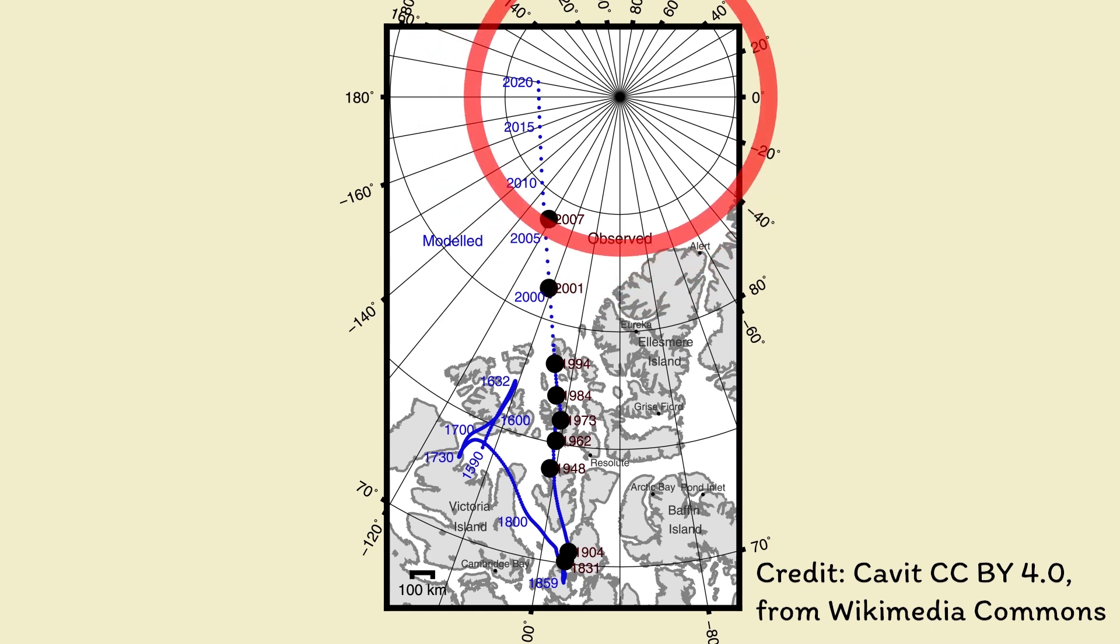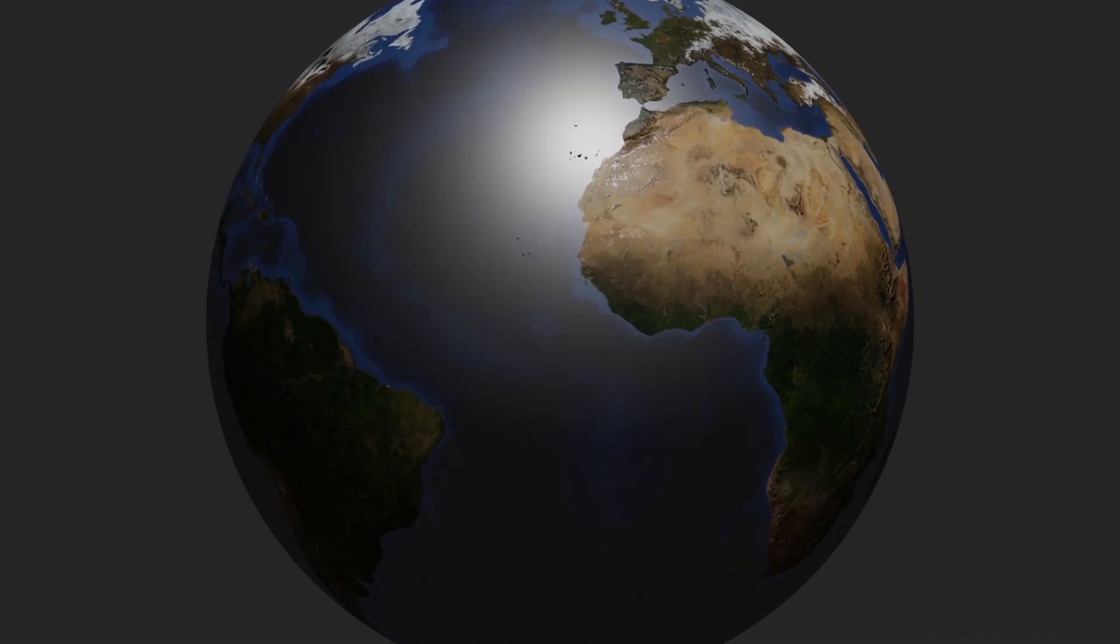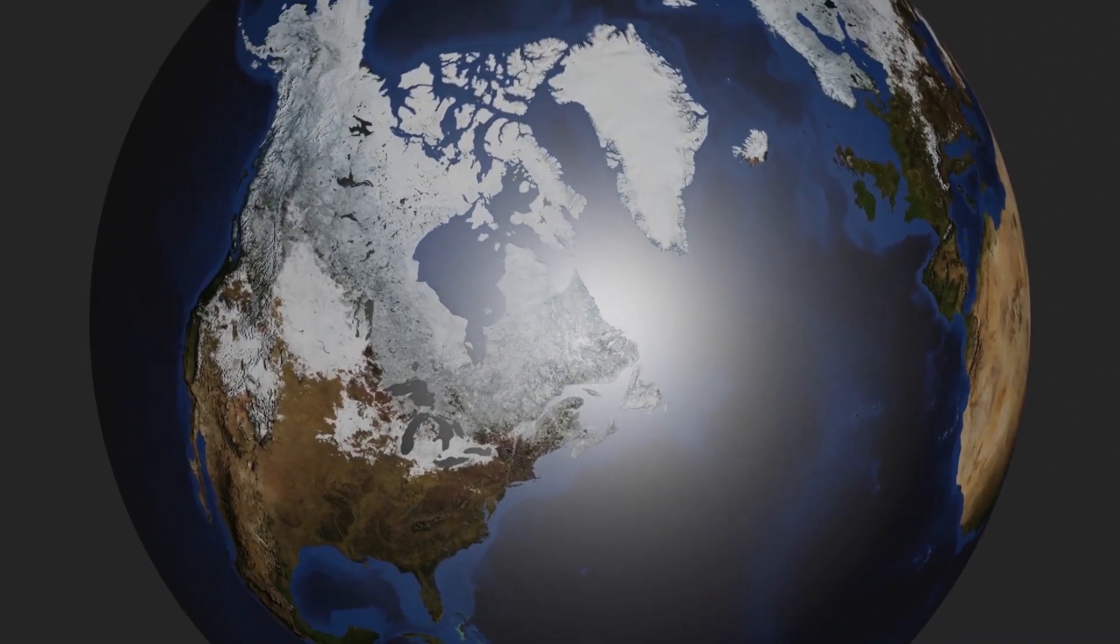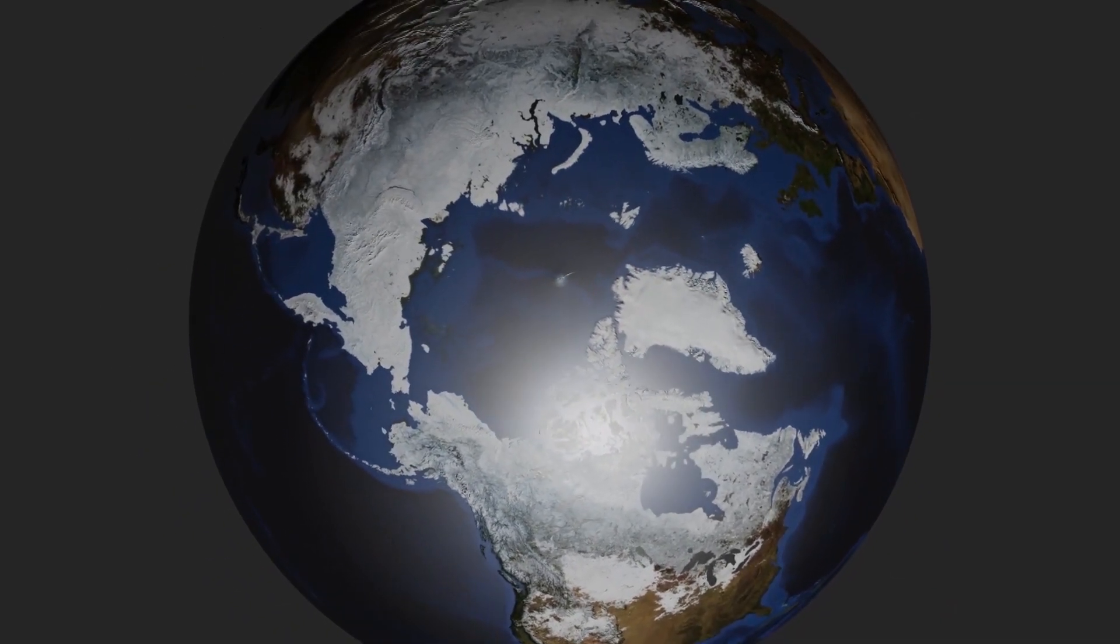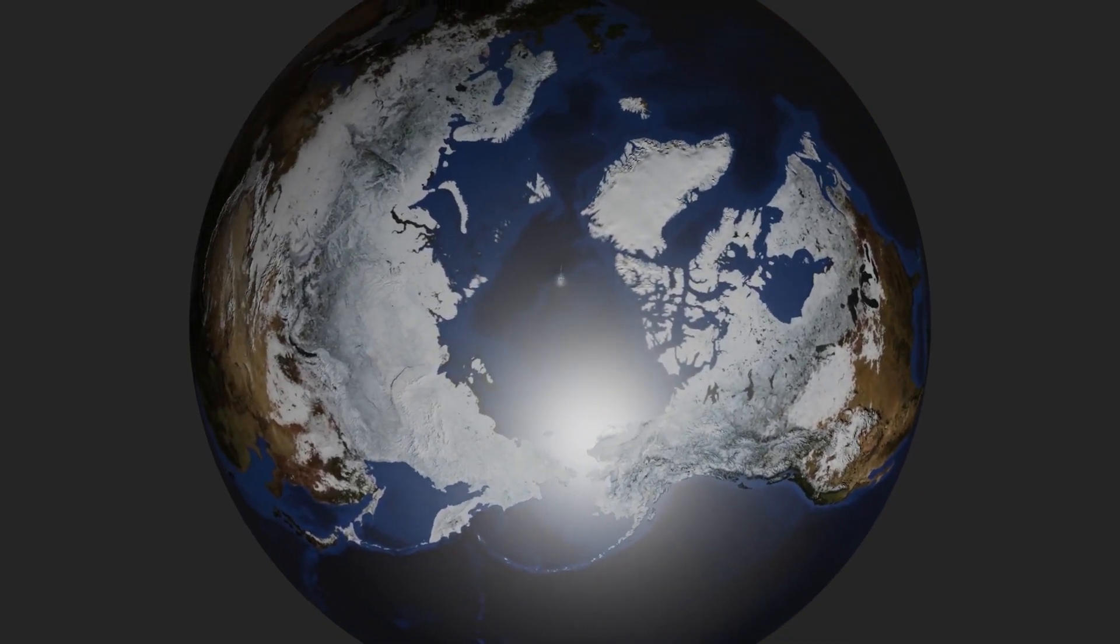True North is that point where the parallels of longitude all intersect. Of course, this is the navigational definition as we're defining True North so that we can use it on our charts. True North could be approximated according to the Earth's rotation, but it actually wobbles as well, so it doesn't truly define a fixed point. That is why True North for navigation is defined with reference to lines of latitude and longitude.